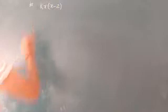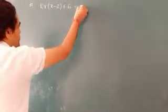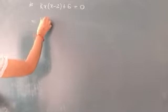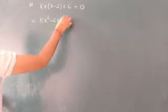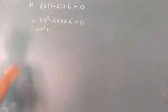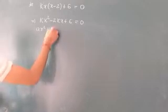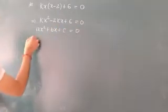Now a question can be: find the value of k if roots are equal. For example, the equation is kx(x - 2) + 6 = 0. First, we expand this into standard quadratic form: kx² - 2kx + 6 = 0. Then we compare with ax² + bx + c = 0 to get a = k, b = -2k, and c = 6.